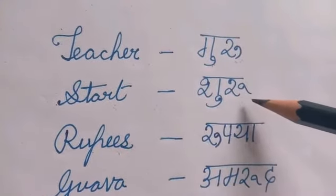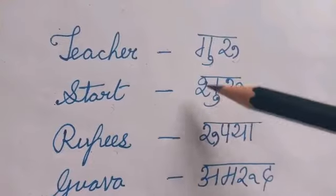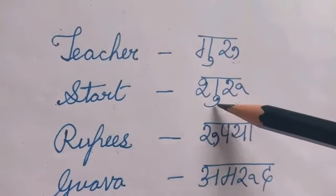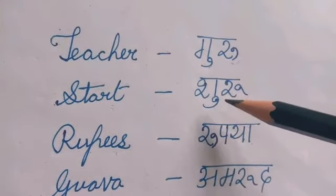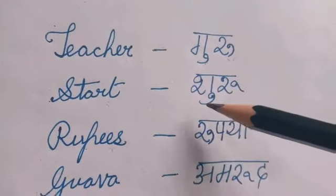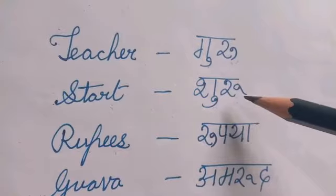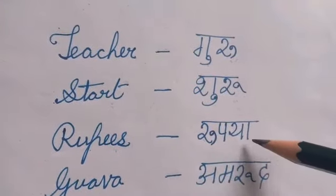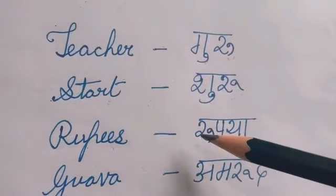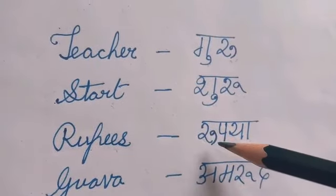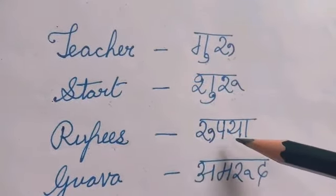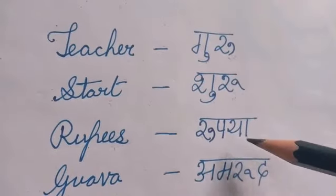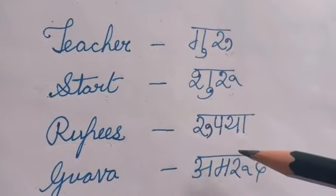Shuru — Sha me chhoti U ki matra, Ru me badi U ki matra — Shuru. Rupia — Ru me chhoti U ki matra — Rupia.